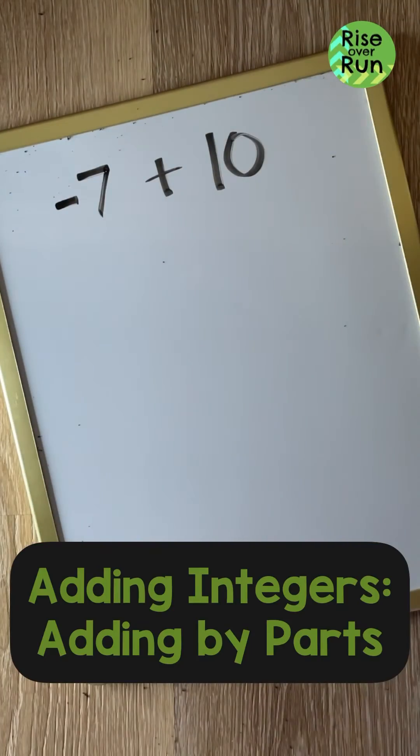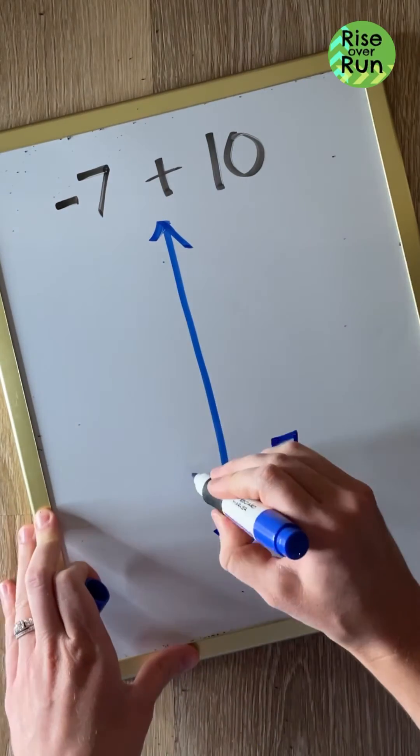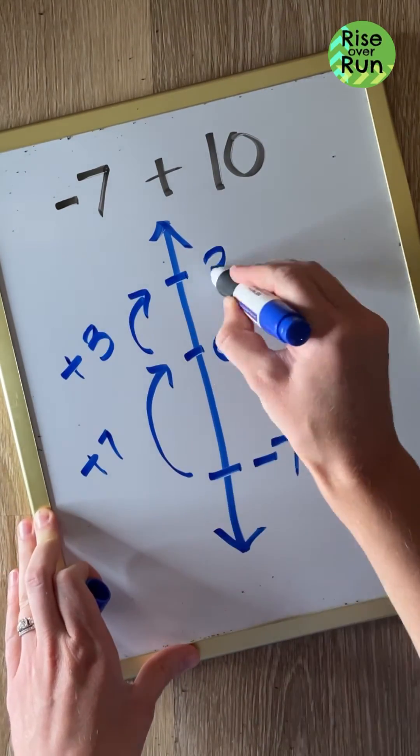Let's see how adding by parts can help us add integers. We'll start at negative 7. We'll add 7 to get to 0, and then we'll add 3 more to get to a positive 3.